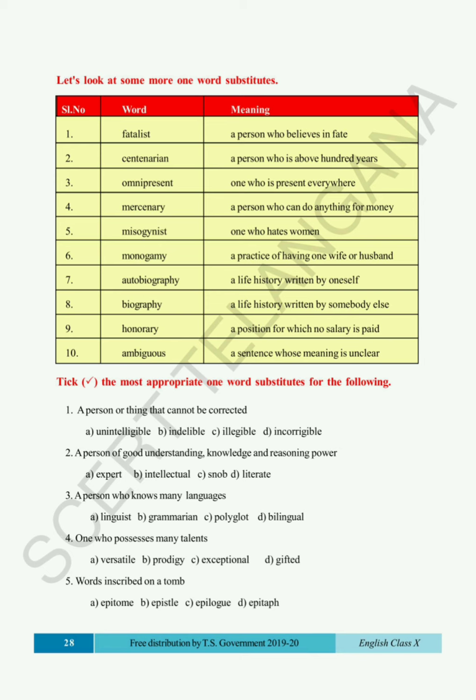Next is 'monogamy' — the practice of having one wife or one husband. Now 'autobiography' — a life history written by oneself is called an autobiography, meaning the person has written his own story. Next is 'biography' — a life history written by somebody else is called biography. If somebody has written one person's life story, that is biography; if he has written his own life history, that is autobiography. Next is 'honorary' — a position for which no salary is paid.